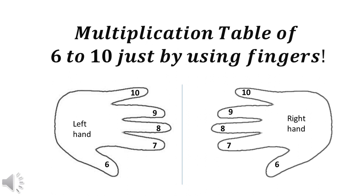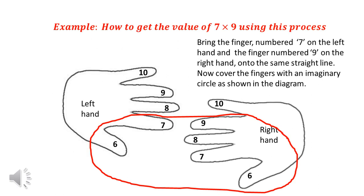Now, let's see how to do the multiplication. We will start with say 7 into 9. To begin the process of getting the value of 7 times 9, first we have to place the finger marked 7 on the left hand and the finger marked 9 on the right hand, pointed towards each other as shown in the diagram.